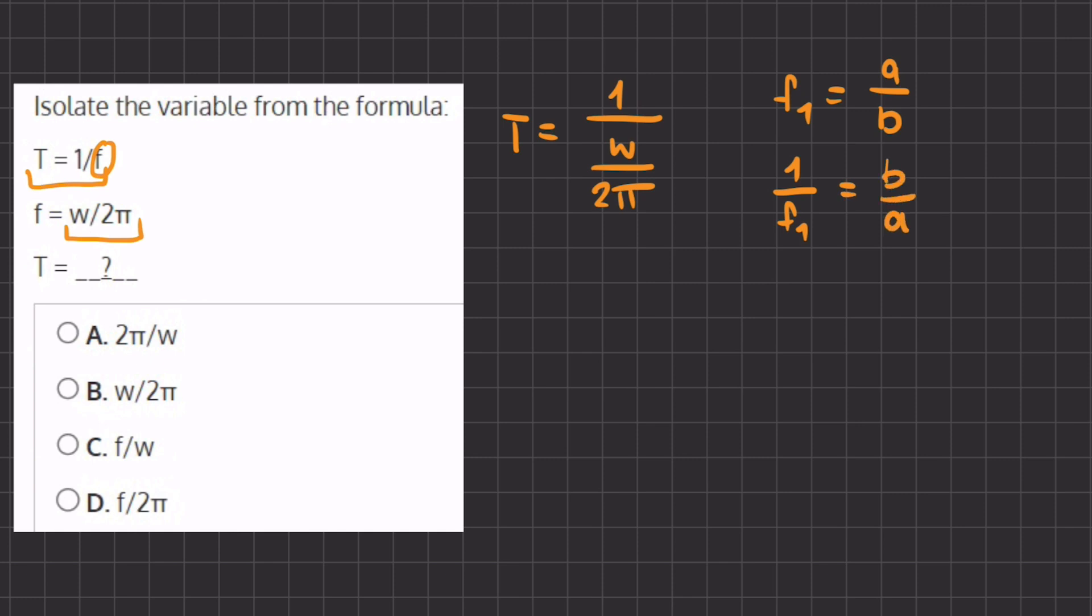And so if we compare this to our t, we have t equals 2 pi divided by w. What we did is we created the inverse.